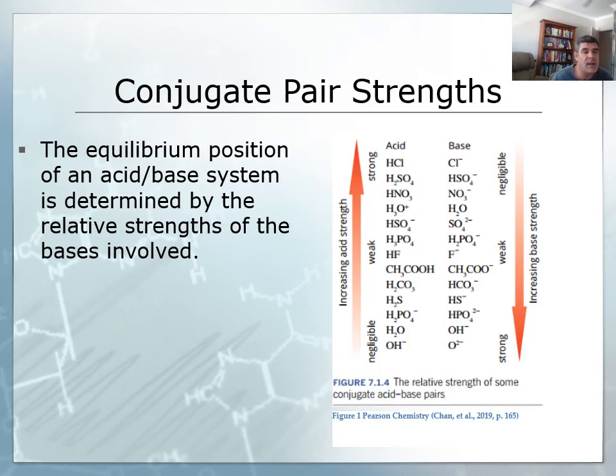One of the important things about conjugate pairs is that we can actually use them to start to get a sense of the strength of different types of acids or bases. This is independent of what we've looked at previously, which were mathematical expressions for the difference between a strong and a weak acid. Now we get a chance to look at what's happening in terms of the conjugates. The equilibrium position of the acid-base system is actually generally determined by the relative strength of the base. So if we know what the base is in a conjugate pair, then we can get a sense of the strength of its conjugate acid.